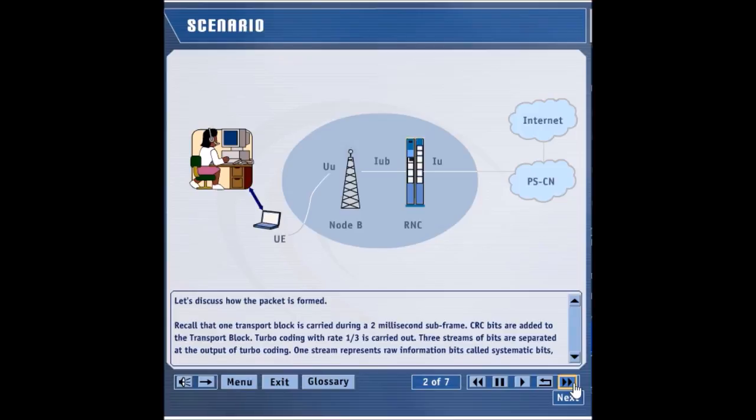After the data session is set up, Sue would be communicating with the Node-B over the radio interface. In addition, the RAN would have assigned resources at the Node-B and the RNC for Sue's wireless Internet session.